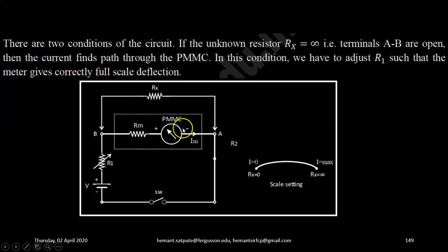So when Rx is infinite, meter gives full scale deflection, current will be maximum. So it is marked on the scale as infinite resistance.